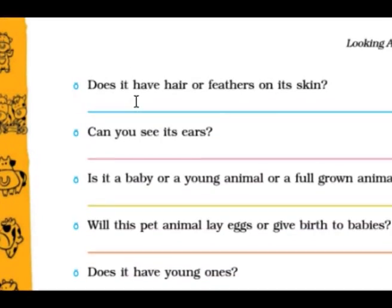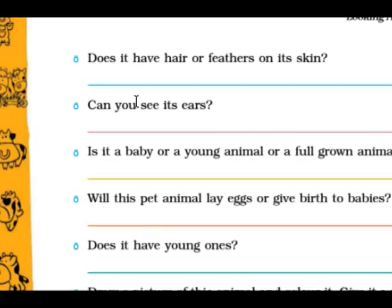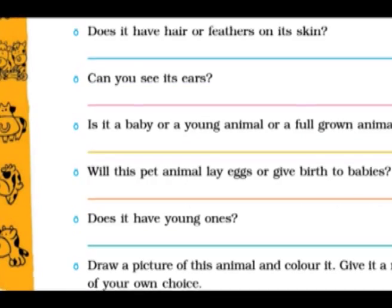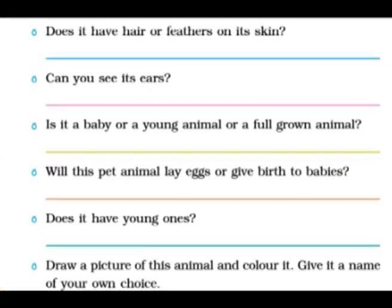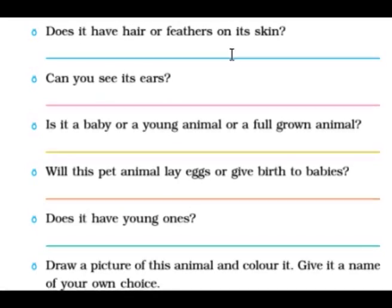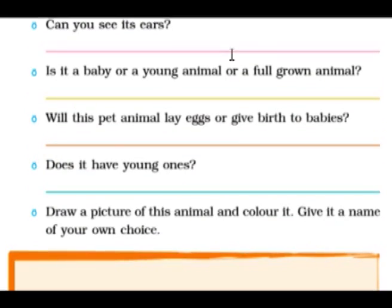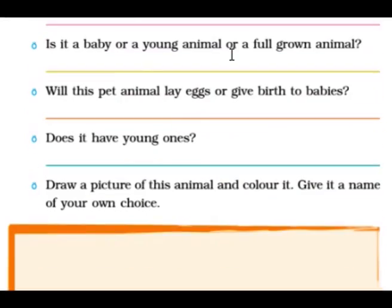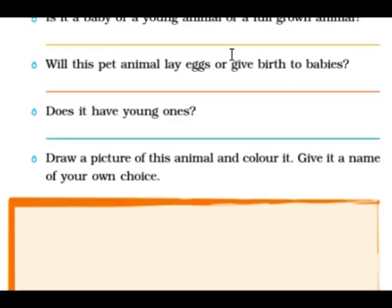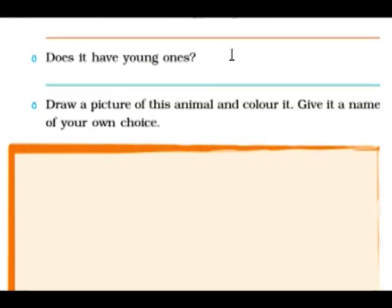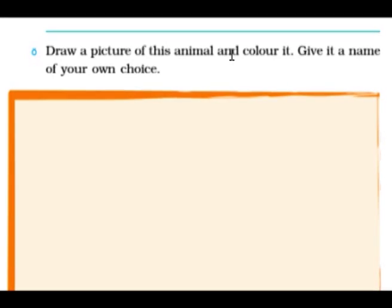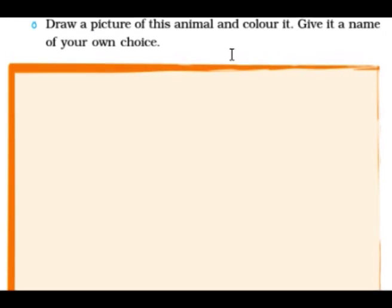We give vaccination to the animals and we feed them regularly. Does it get angry? Sometimes when this animal is disturbed, it gets angry — when and how? Does it have hair or feather? Dogs have hair. Can you see its ears? Yes, they have an external ear. Will this pet lay eggs or give birth? Dogs usually give birth to babies. Does it have young ones? Write it down.